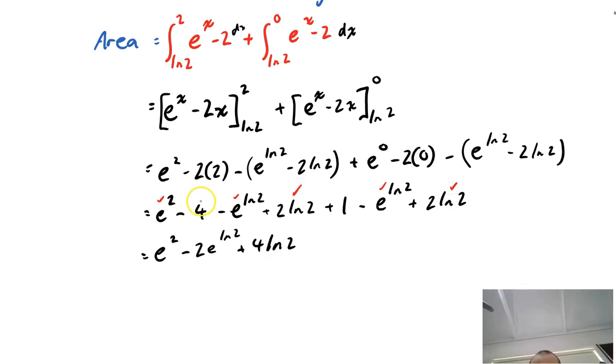and I have a negative 4 plus 1, let's make sure that I've got that right, negative 4 plus 1, that must be negative 3.